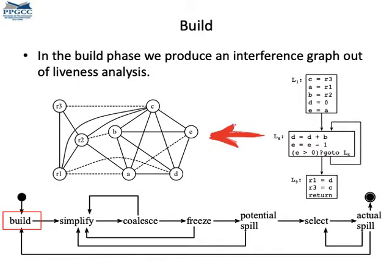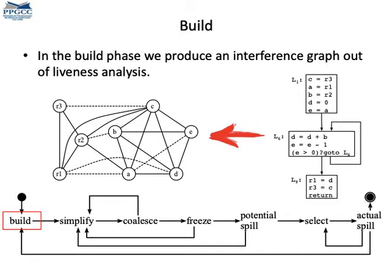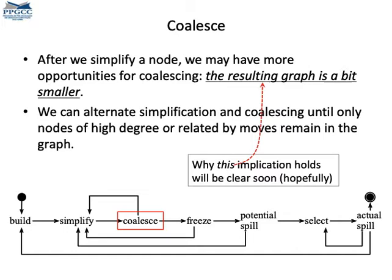The first phase of Iterated Register Coalescing is called Build. In this phase, we build the interference graph of the program, using live-range information to descend. Next, we have the Simplify phase. In this phase, we apply Kempe's Heuristic, which we saw in the last class, to check if the interference graph can be colored with k colors.